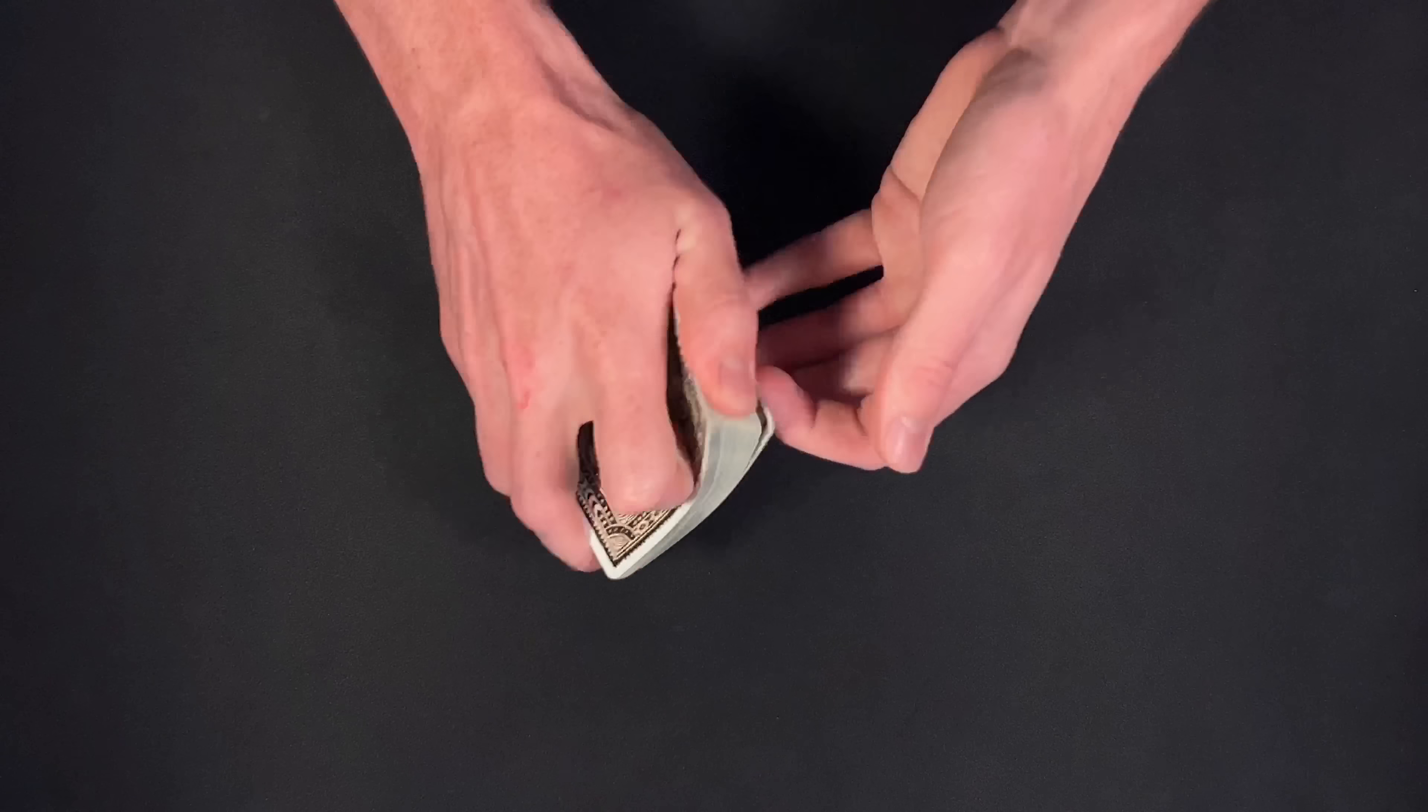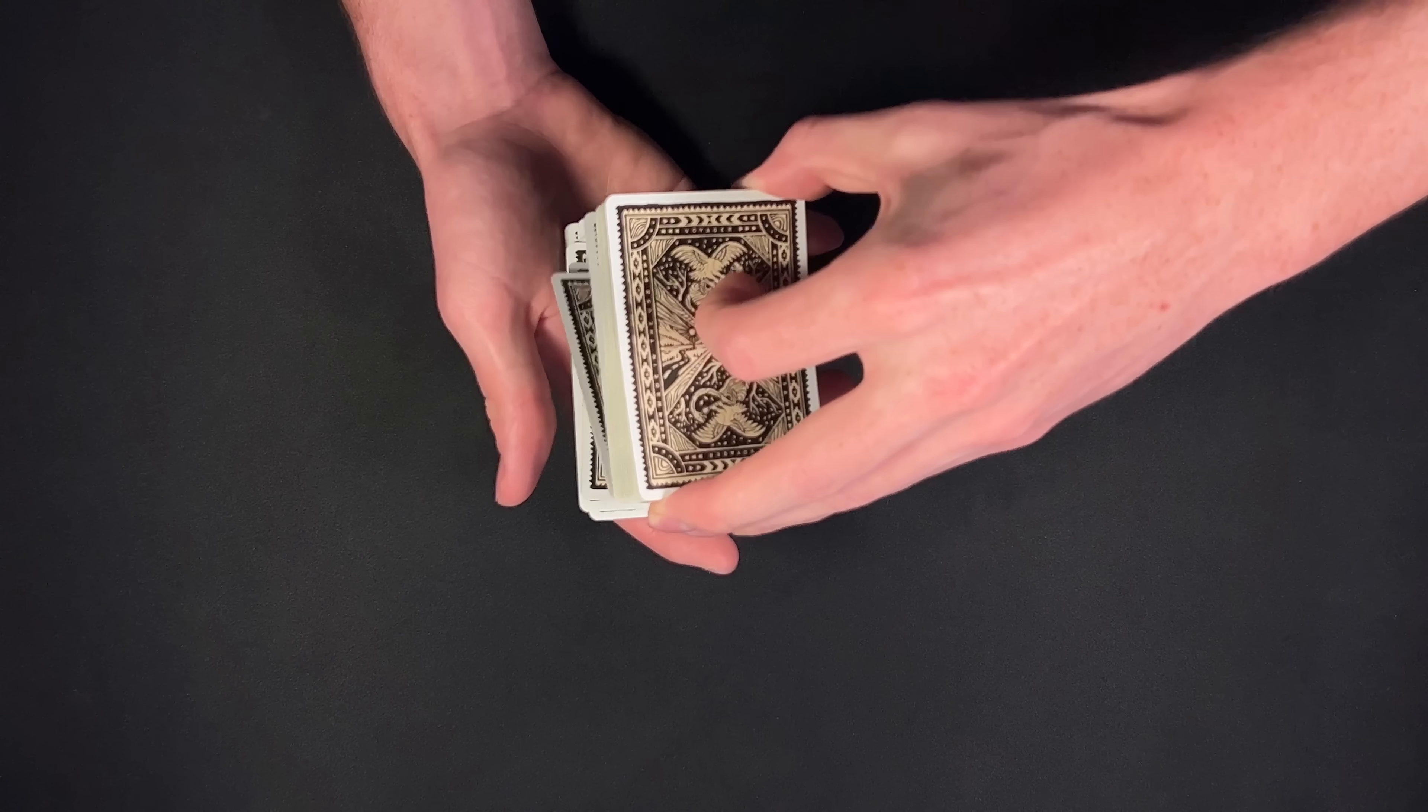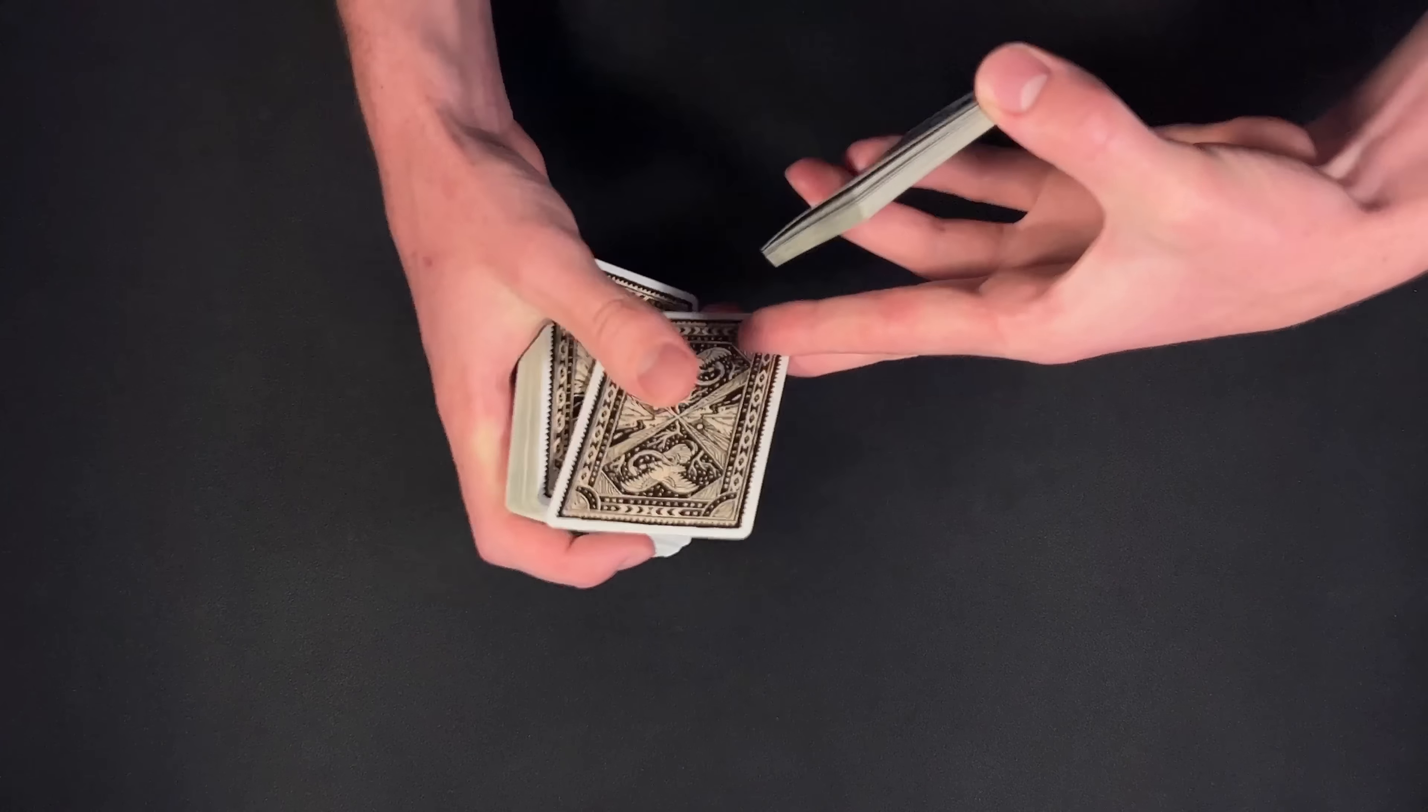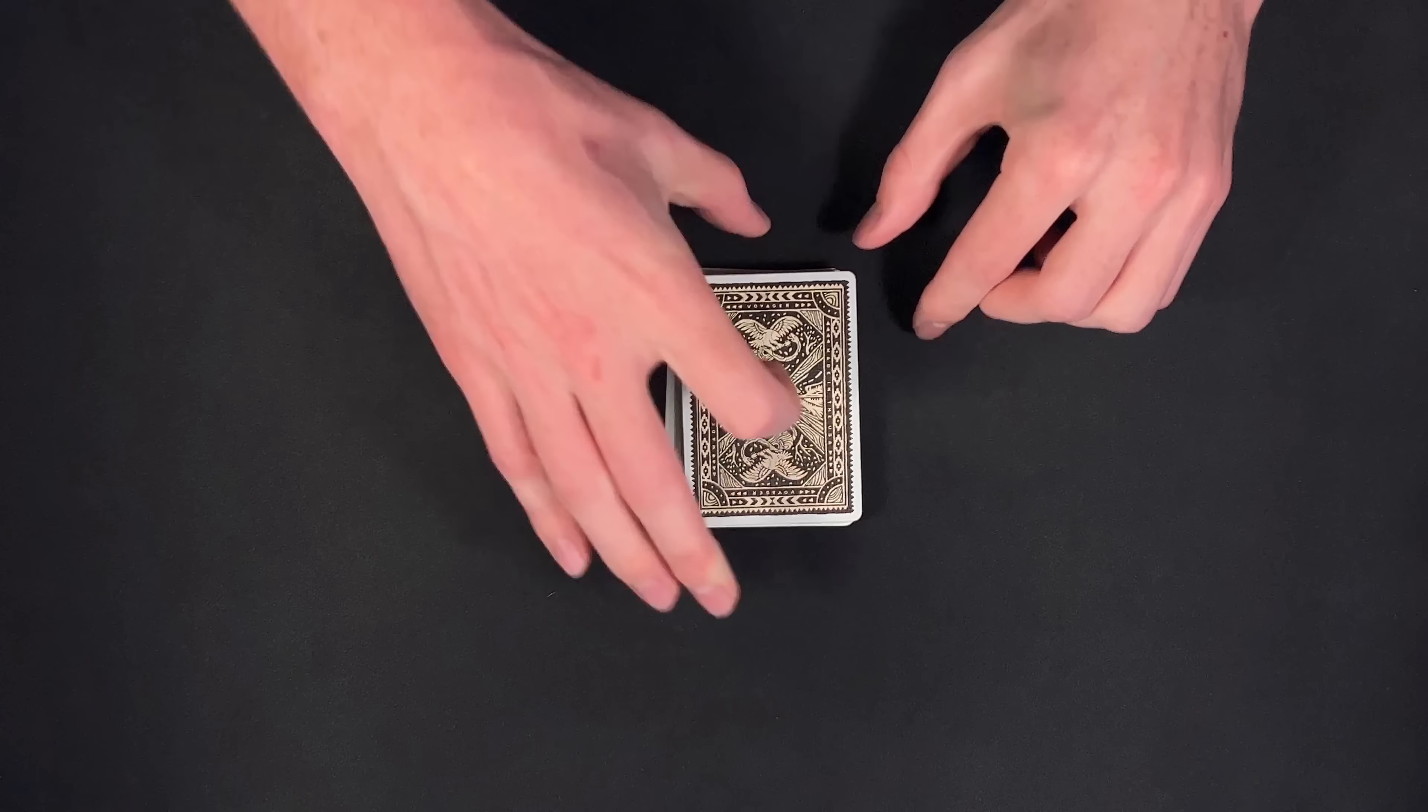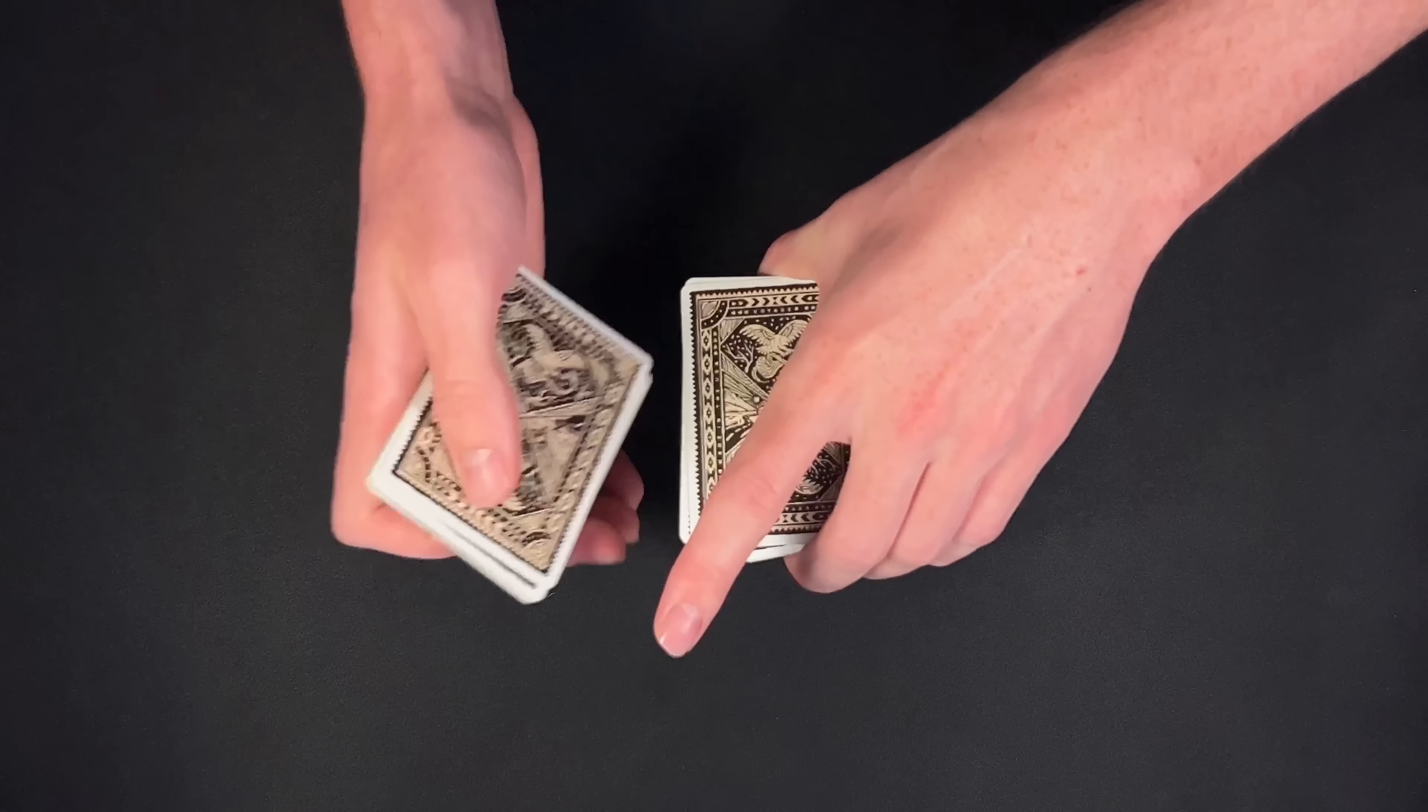So I would start this one off by having my spectator give the deck a shuffle. Once they are done, I would have them make a selection. They can just call stop anywhere as I dribble off cards. Let's say they call stop right here. I would just have my spectator look at and remember the card they chose. We're going to go ahead and lose this card somewhere into the middle of the deck. I will give the pack a few cuts. I will also give the deck a riffle shuffle and just for good measure, I will give the cards a few more cuts to truly lose my spectator's card into the middle of the pack.